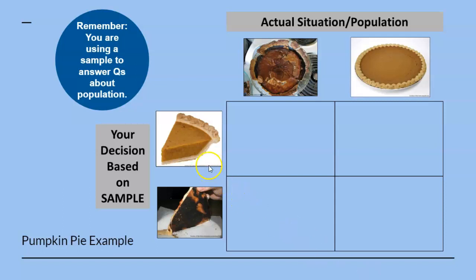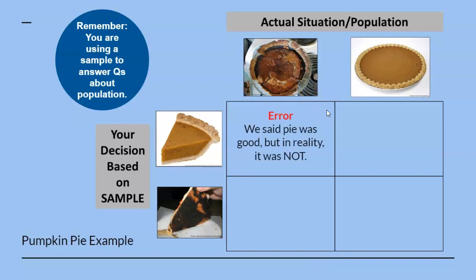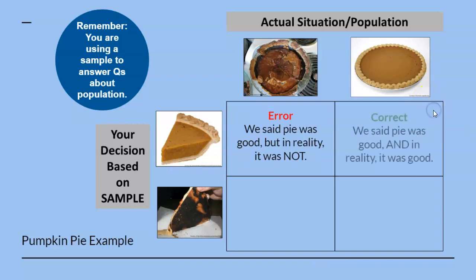First, you ate a slice of pie and made the decision that the whole pie was good based on this particular slice. But in reality, that slice came from an ugly burnt pie. In other words, you made an error in your decision — we said the pie was good, but in reality it was not good. Second, you ate this slice of pie and made the decision that the whole pie was good, and in reality, that slice came from a beautiful tasty pie. In other words, you are correct in your decision — we said the pie was good, and in reality, the pie was good.